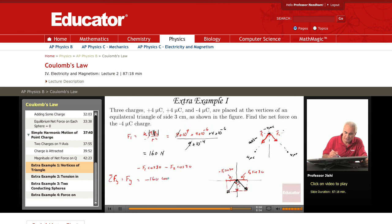So minus 320*cos(30), which is √3/2, so it's -160√3 newtons. This is Fy, this is the total force.